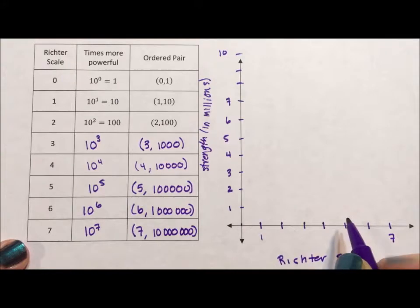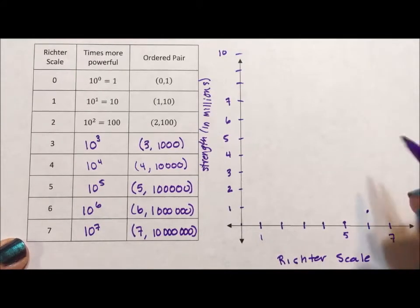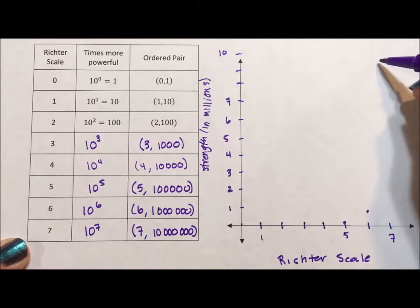And then when we get to 500,000, that's when we get our first, like we're a tenth of the way up. But then for 6, we get a million and for 7, we get 10 million, which is all the way up here.